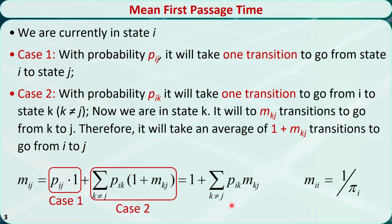The first passage time from i to itself is equal to 1 over πi, where πi is the steady state probability of state i.